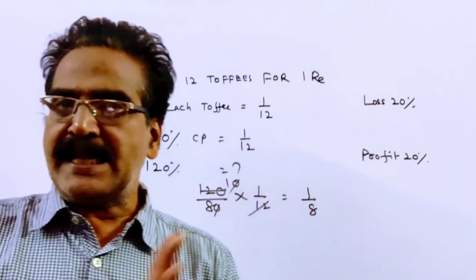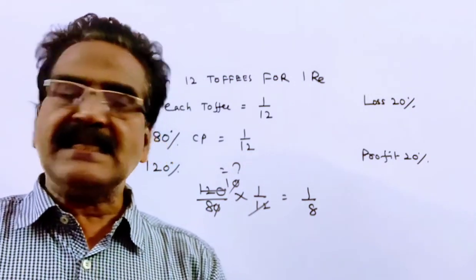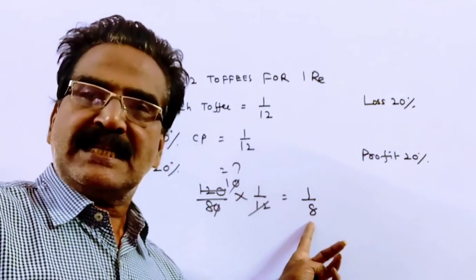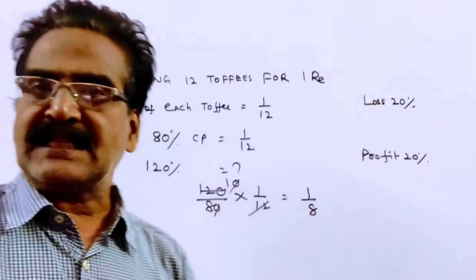So friends, he has to sell each toffee for 1 by 8. That means 8 toffees for 1 rupee to make a profit of 20%.